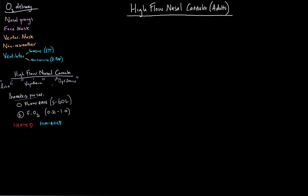High flow nasal cannulas are different in that flow and FiO2 aren't as closely connected as with nasal prongs or regular face masks. On a high flow nasal cannula device, you independently set a flow rate and an FiO2. These devices typically deliver between 5 and 60 liters per minute, and a blender system allows you to deliver, for example, 40 liters per minute at 21% FiO2, or 10 liters per minute at 100% — you choose both independently.